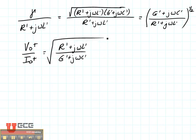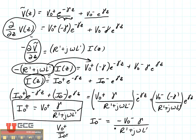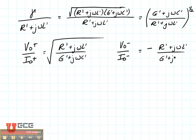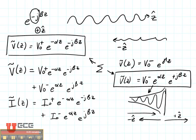Let's also look at V0 minus over I0 minus. There's that same term, but here there's a minus sign. So V0 minus over I0 minus is going to be minus the square root of R' plus j omega L' over G' plus j omega C'. Now let's go back two slides and see what those two terms represent. If we want to know the impedance, we simply take the positive traveling voltage divided by the positive traveling current, or the negative traveling voltage divided by the negative traveling current.